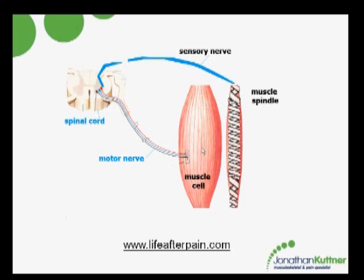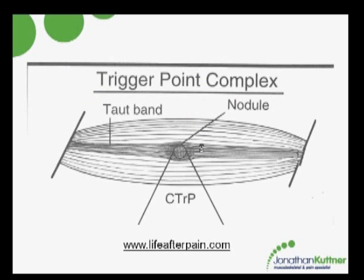The problem is that when this little arc starts malfunctioning, it sets up a trigger point. What happens is the spindle starts firing unnecessarily and the muscle goes into spasm — but it's a small area of spasm. You've got that same muscle, and inside the muscle is a trigger point complex. The trigger point complex pulls a taut band within the muscle, which you can feel almost like a guitar string within your muscle.